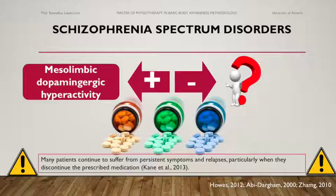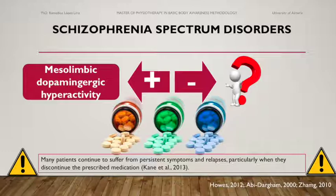Negative symptoms therefore remain a relatively treatment-refractory and debilitating component of schizophrenia. Once the diagnosis is made, antipsychotic drugs that block dopamine receptors are the main treatment of schizophrenia. Many patients continue to suffer from persistent symptoms and relapses, particularly when they discontinue the prescribed medication.